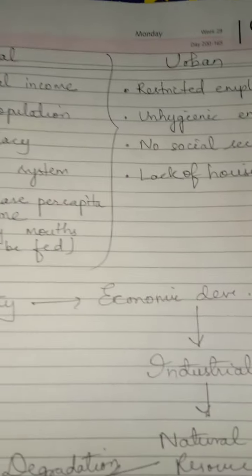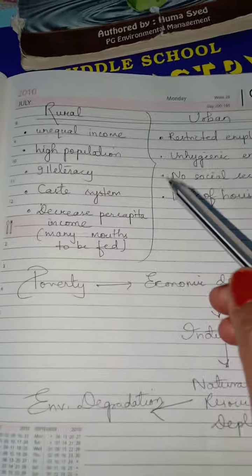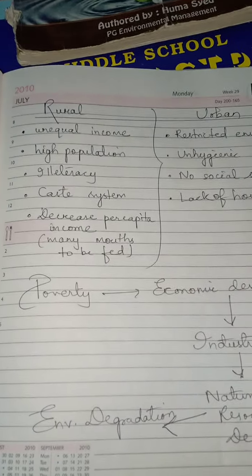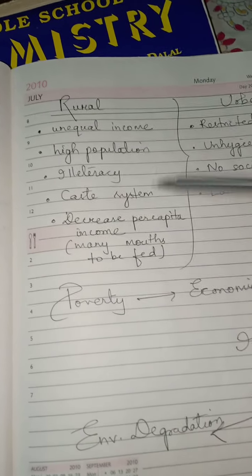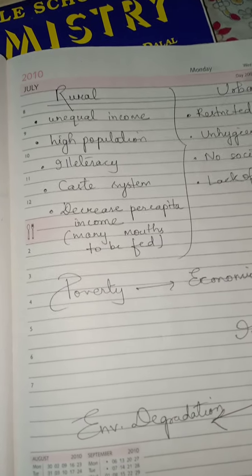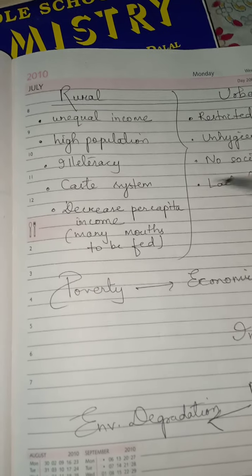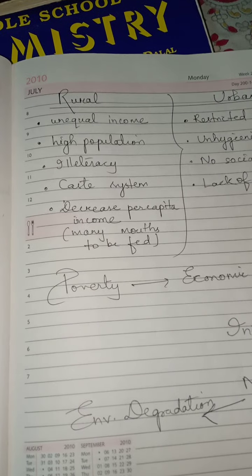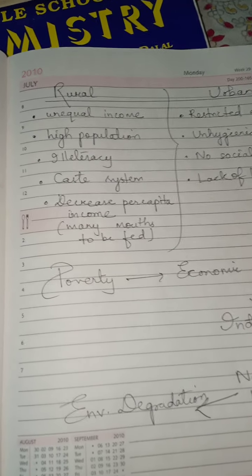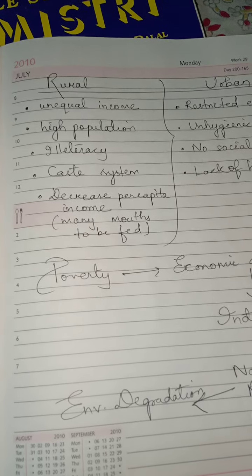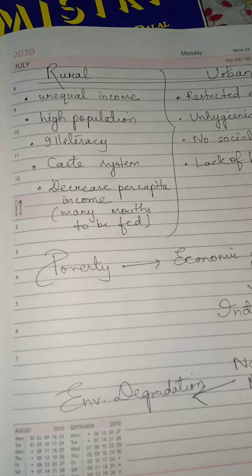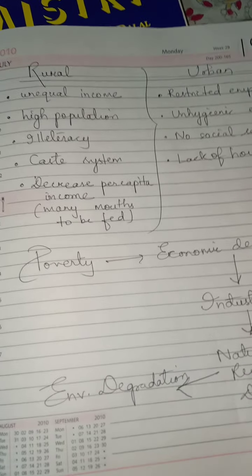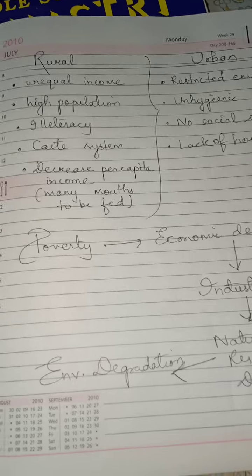Coming to the classification of poverty, we have rural and urban. Rural poverty generally focuses on unequal distribution of income between landlords who own a majority of land and poor farmers. Zamindars have huge properties but give their land for cultivation and charge very high rates, causing the poor farmers to suffer greatly.